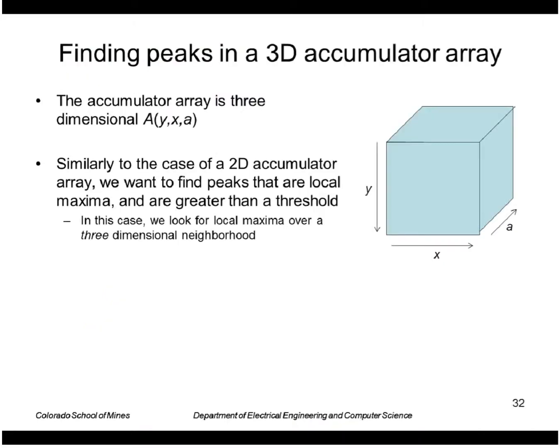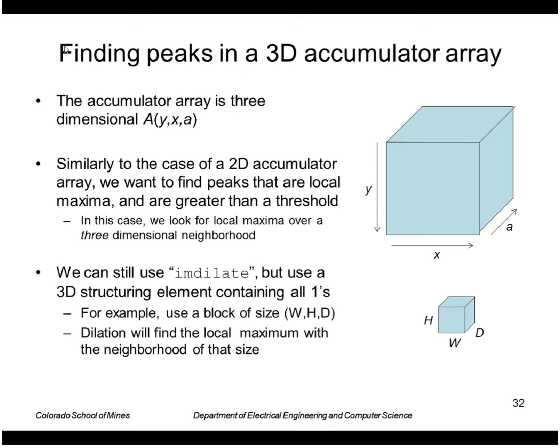Okay, so the way we do that is similar to the case of the 2D array. Namely, we want to find peaks that are local maxima and are greater than a threshold. Except this time, we have to look over a three-dimensional neighborhood, and we can use imdilate to do that with a 3D structuring element. So dilation again finds the local maximum within the neighborhood of that size.